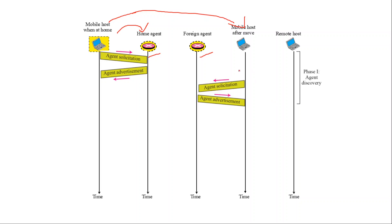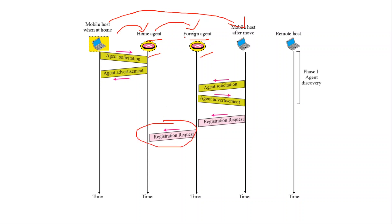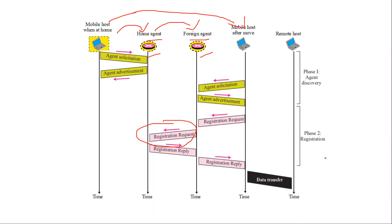Moving on to the second phase, registration: the mobile host wants to register with the foreign agent and the home agent. It does this by sending a registration request message to the foreign agent. The foreign agent then relays this registration request to the home agent, so the home agent now knows the address of the foreign agent. The home agent replies with a registration reply, and the foreign agent also responds with a registration reply telling the mobile host that registration is complete.